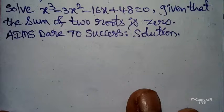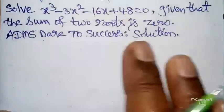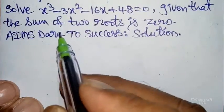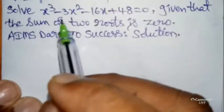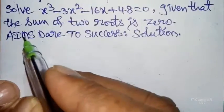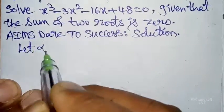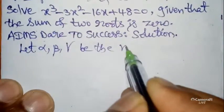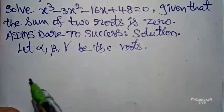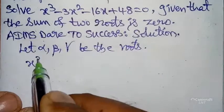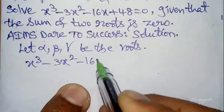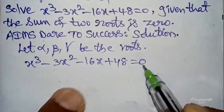Now, the degree of the given equation is three. Let alpha, beta, gamma be the roots of the given equation. The given equation is x³ - 3x² - 16x + 48 = 0.